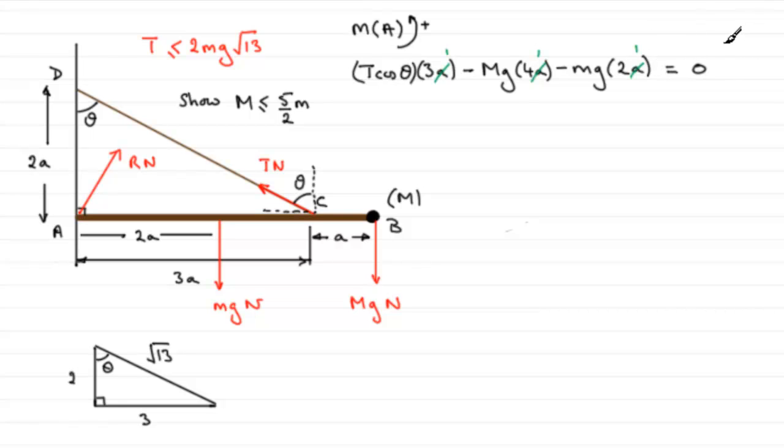So if we tidy this up, we've got T times 3, which is 3T, times the cosine of theta. Cosine of theta, remember, is adjacent over hypotenuse, so that's going to be 2 over the square root of 13.